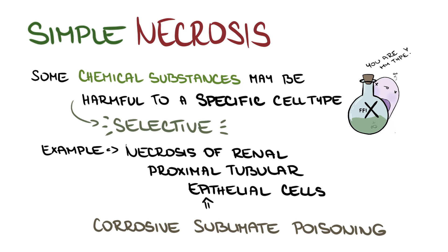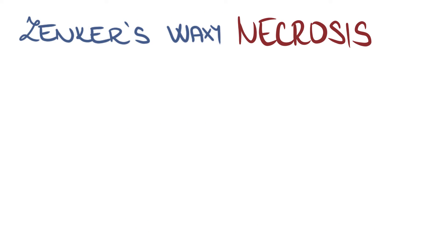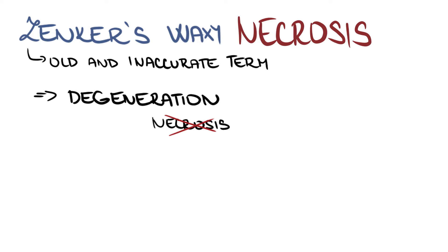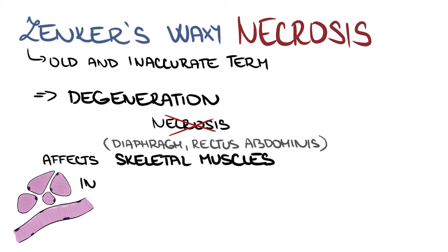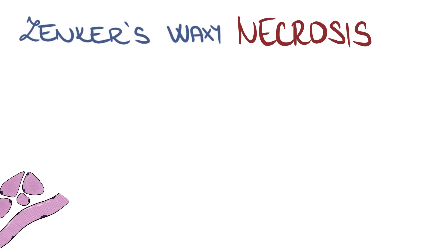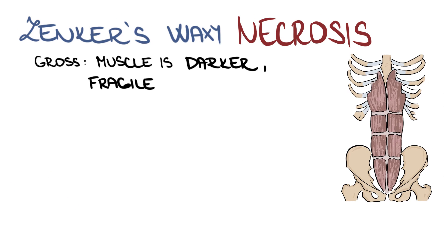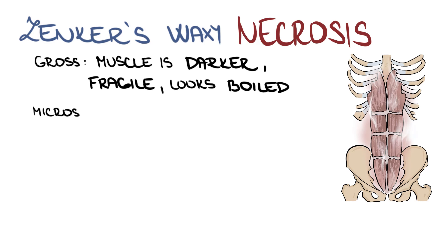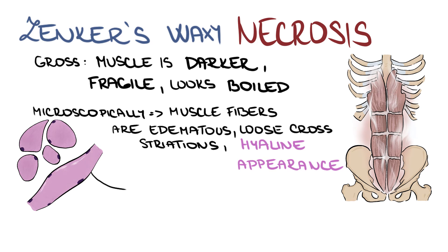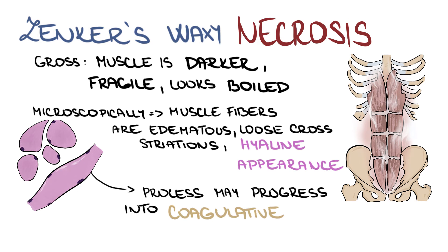Finally, we should briefly mention Zenker waxy necrosis. It is an old and inaccurate term, since the process represents rather a degeneration than a true necrosis. This process affects skeletal muscles, such as the diaphragm or rectus abdominis, in patients with severe toxemia — for example, in typhoid fever. Grossly, the muscles are darker, fragile, and look boiled. Microscopically, muscle fibers are edematous, lose cross-striations, and their cytoplasm has a hyaline appearance. Later on, the process may progress into coagulative necrosis.